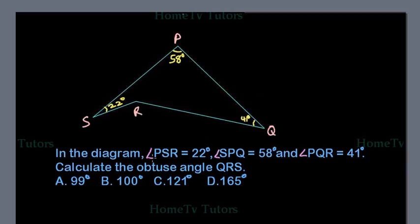In the diagram, angle PSR equals 22 degrees, angle SPQ equals 58 degrees, and angle PQR equals 41 degrees. Calculate the obtuse angle QRS.